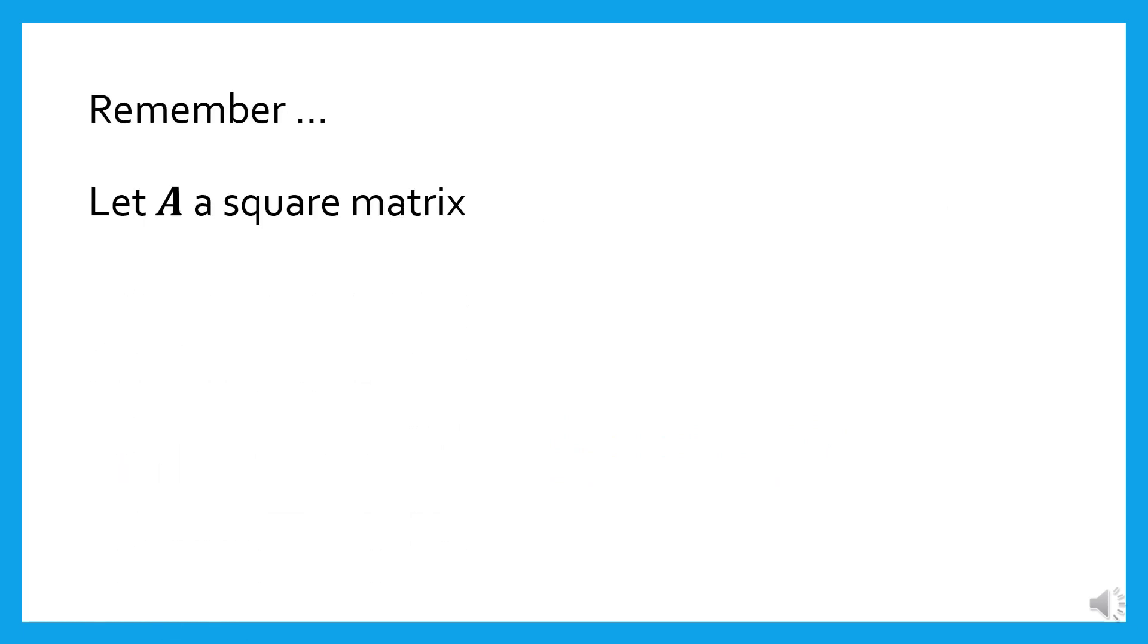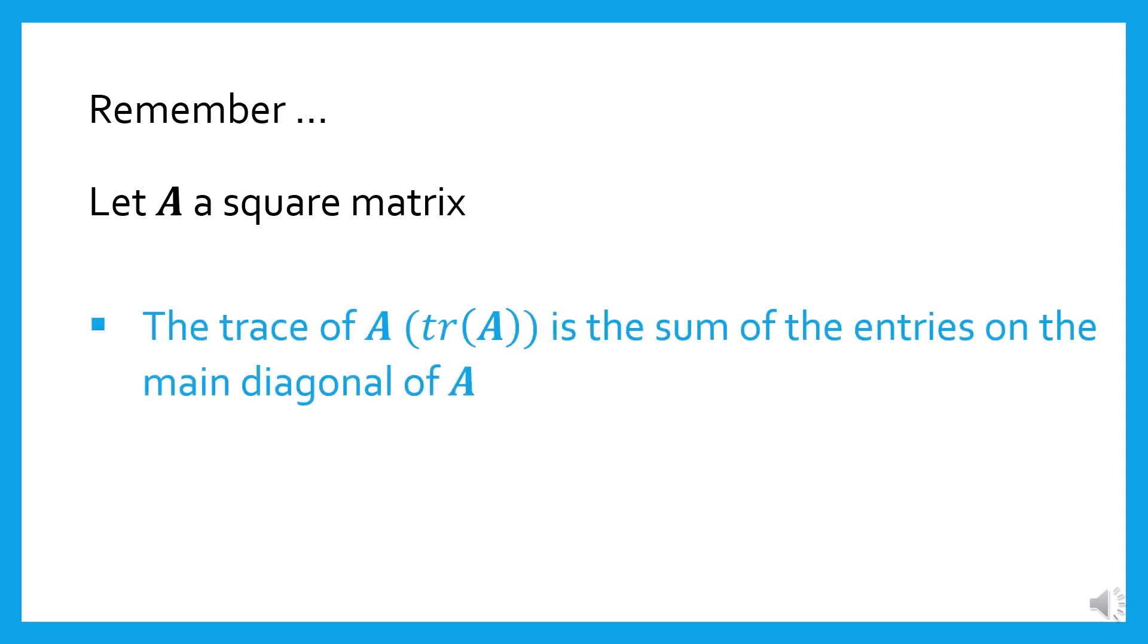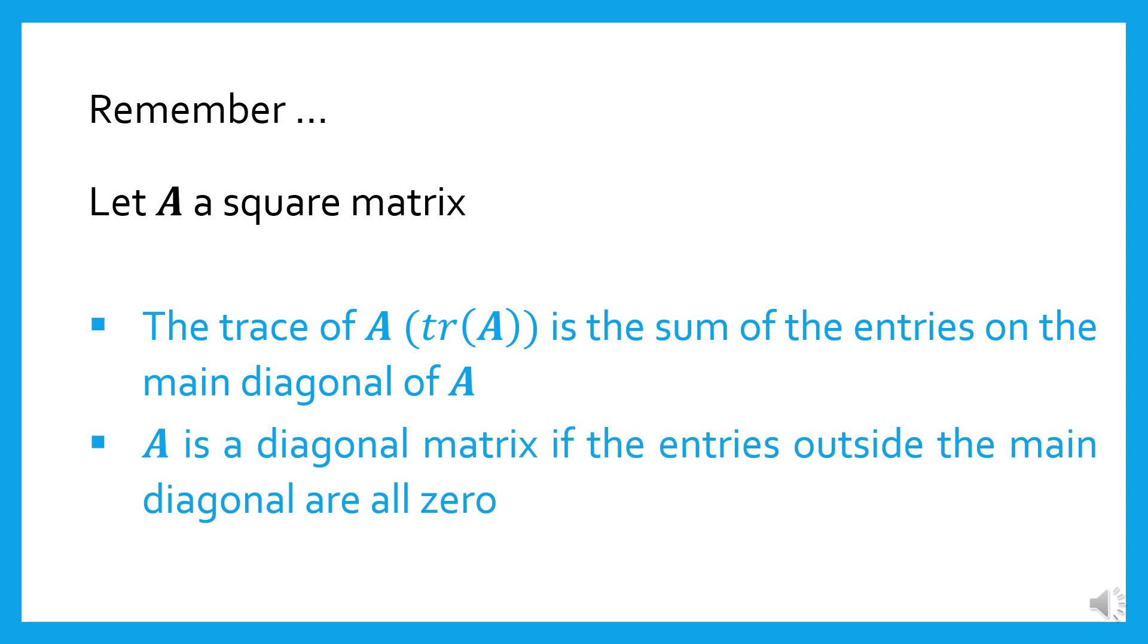Remember, let A be a square matrix. The trace of A is the sum of the entries on the main diagonal of A. A is a diagonal matrix if the entries outside the main diagonal are all zero.